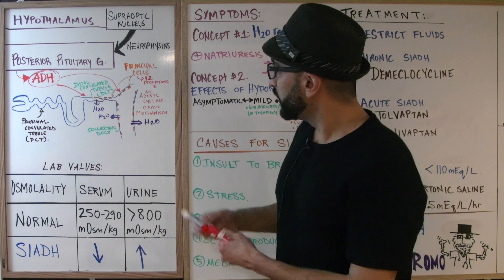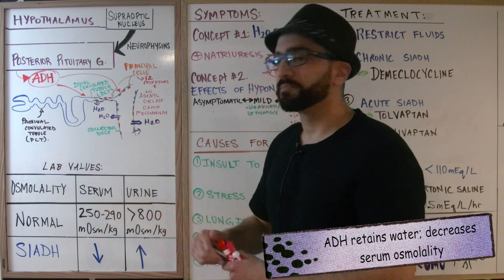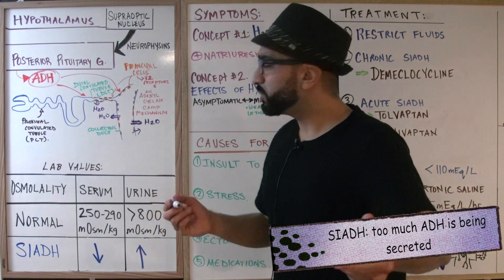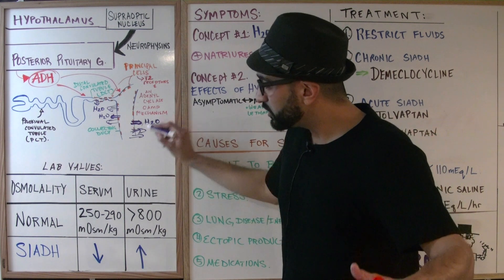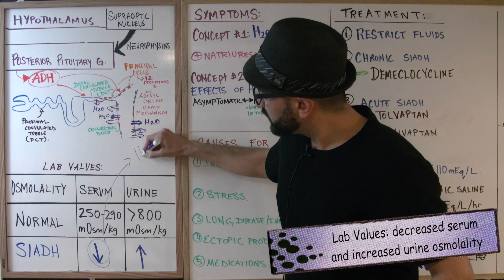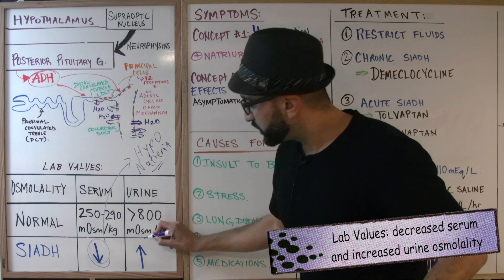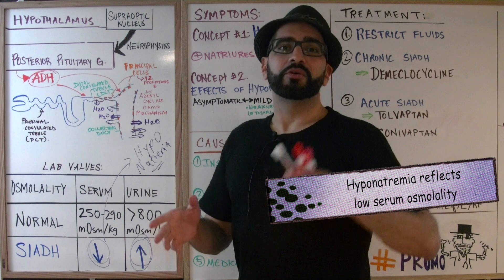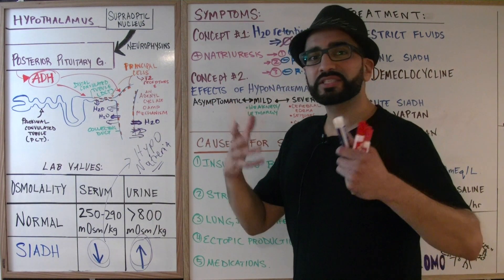As drawn here with this purple arrow, water retention occurs, bringing serum osmolality back to normal range. But in SIADH, too much ADH is secreted, causing excessive water retention. The lab values reflect this: serum osmolality becomes extremely low, giving us hyponatremia, while urine osmolality increases, producing concentrated urine. So the patient presents with low serum osmolality reflected by hyponatremia and high urine osmolality reflected by concentrated urine.